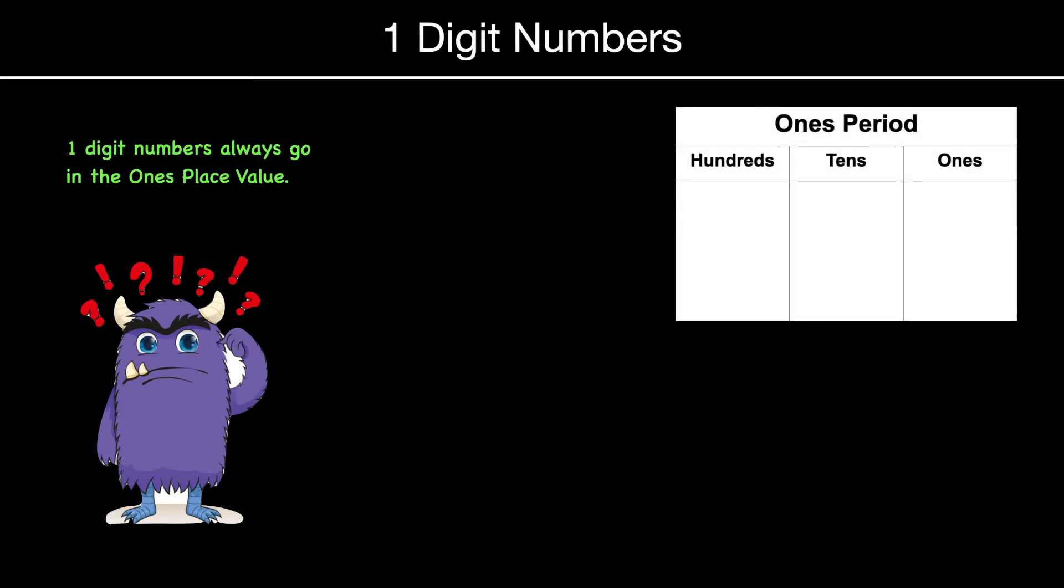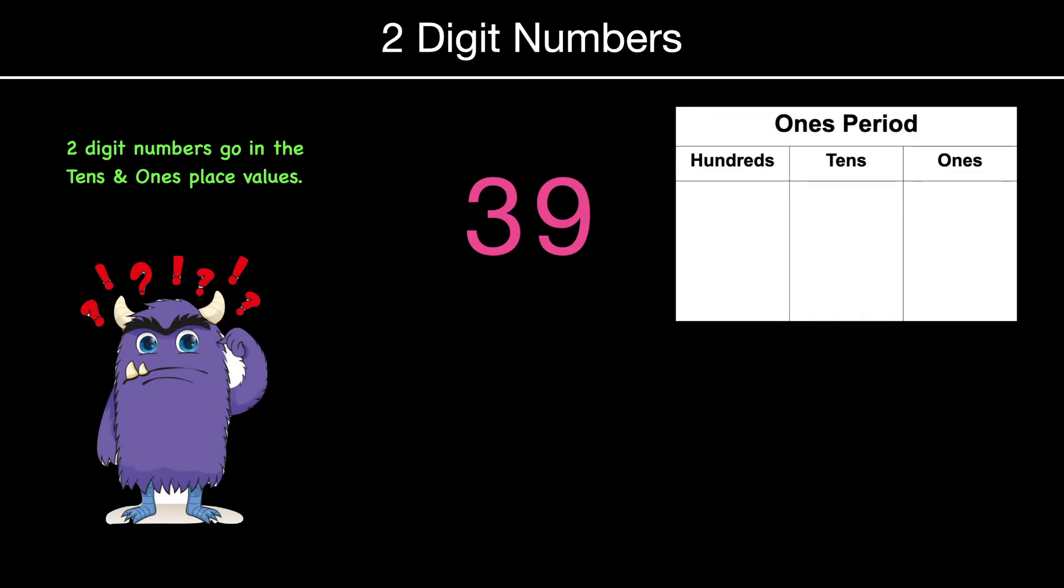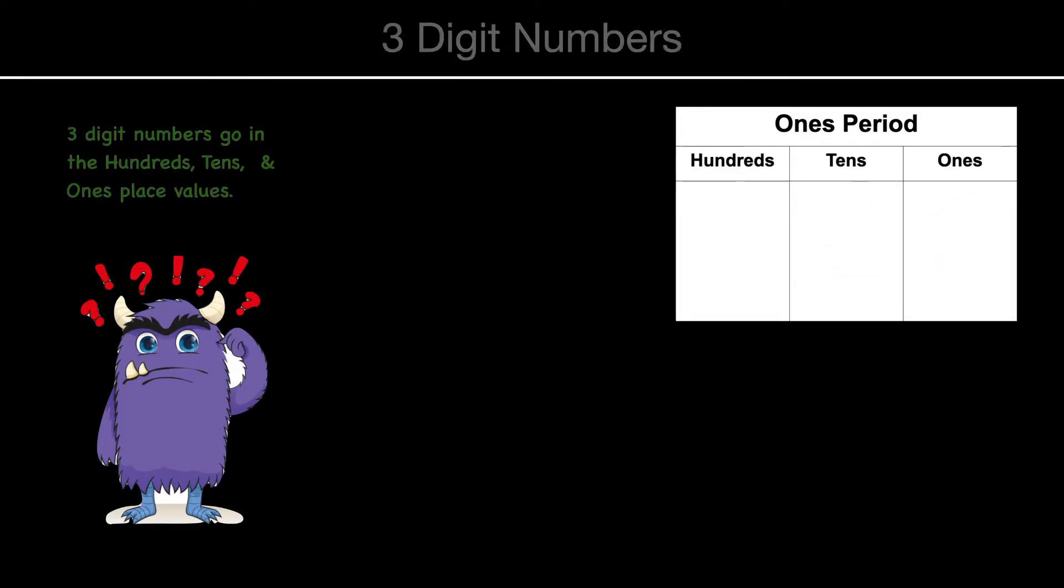So when we are dealing with one-digit numbers, let's just say seven, and the teacher says, well, what place value is that? The rule is if it's one digit, it's in the ones place value. That makes sense, right? Two digits would be in the tens and ones. So 39 would be in the tens and ones place value because it's a two-digit number.